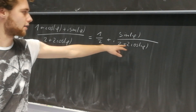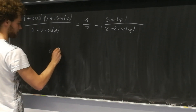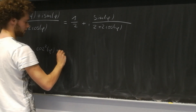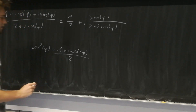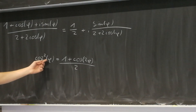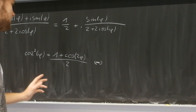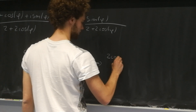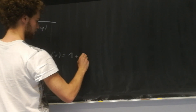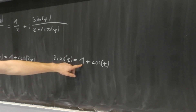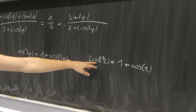Now let's see how we can simplify that. There is another neat little formula: cosine squared of phi equals 1 plus cosine of 2 phi over 2. So if we multiply this expression by 2 and substitute phi with phi over 2 — let's use another variable so it's not confusing — we get 2 times cosine squared of phi over 2 equals 1 plus cosine of phi. And this matches exactly what we have in the denominator. So we can plug this in here.